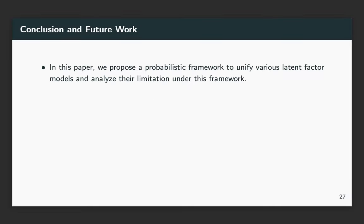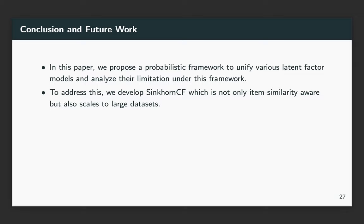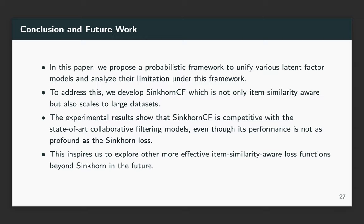Here are the conclusions. In this paper, we propose a probabilistic framework to unify various CF models and analyze the limitations under this framework. To address one of the key limitations, that is, the loss functions adopted by them are oblivious to the item similarities, we propose Sinkhorn CF, which is item-similarity-aware and able to scale to large datasets. The experimental results show that Sinkhorn CF is competitive to the state-of-the-art CF models. But we also should admit that our proposed Sinkhorn CF is not as good as Sinkhorn loss. But I think this inspires us to explore other more effective item-similarity-aware loss functions beyond Sinkhorn loss in the future.